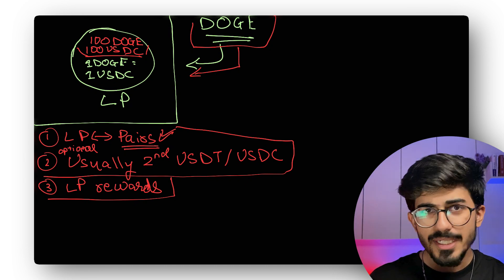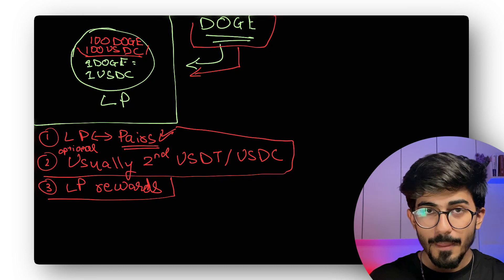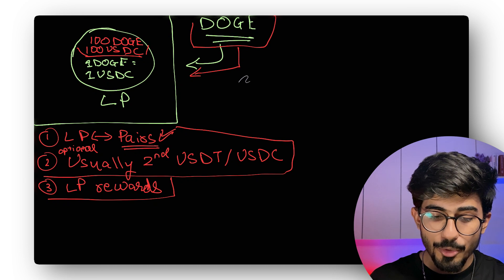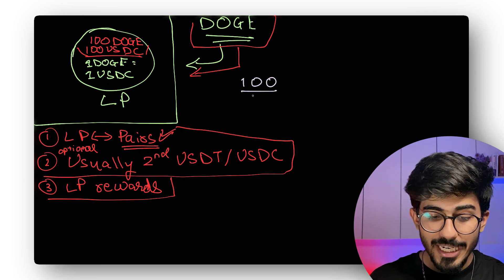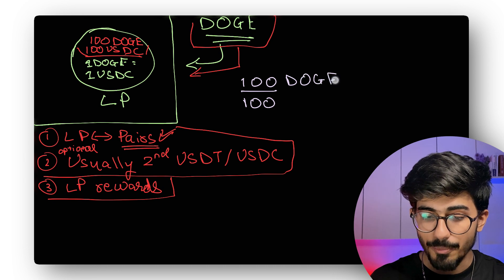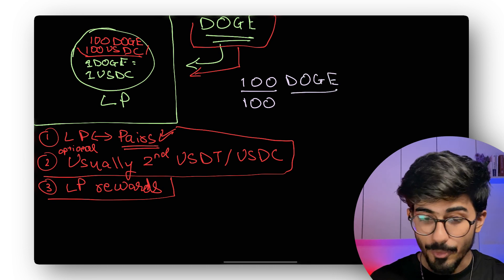But how did we land on this price? Now, many of you guys might have guessed it, but in order to calculate this price, you just need to do the ratio of both of the cryptocurrencies that are available in the liquidity pool.